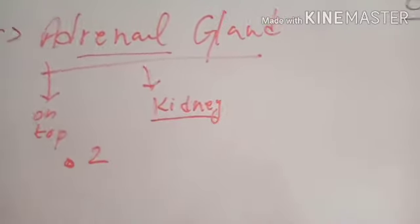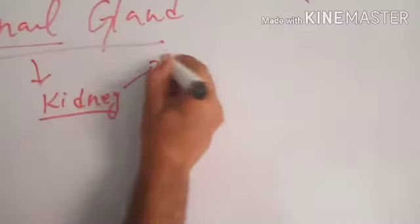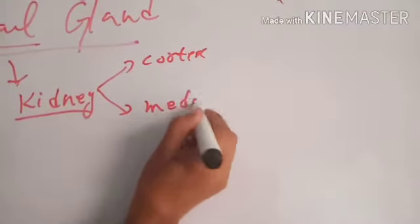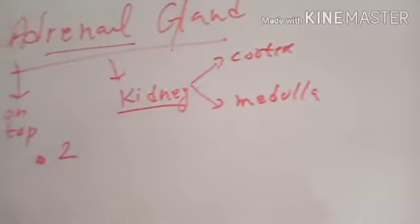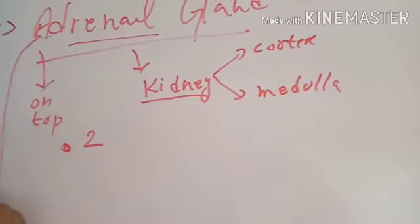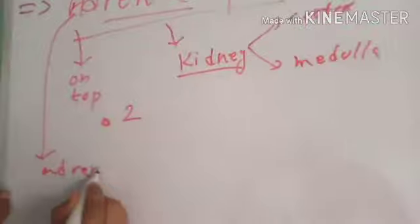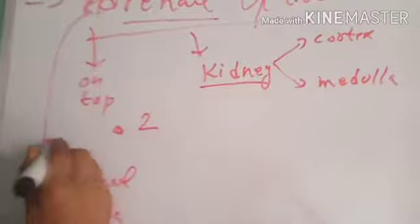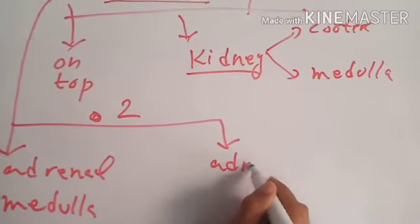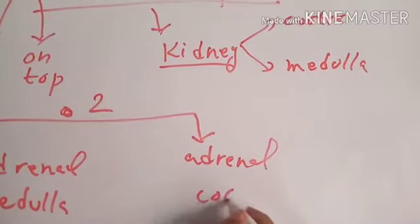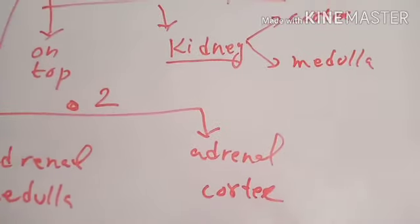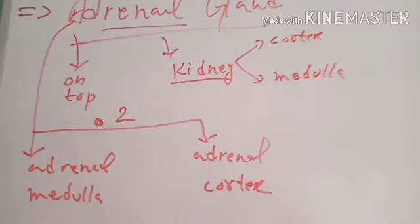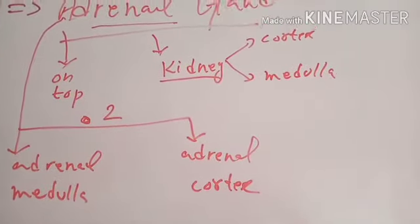As our kidney consists of two parts, cortex and medulla, similarly adrenal gland also consists of two parts: adrenal medulla and adrenal cortex. Adrenal medulla is the inner portion of the adrenal gland and adrenal cortex is the outer external portion of the adrenal gland.